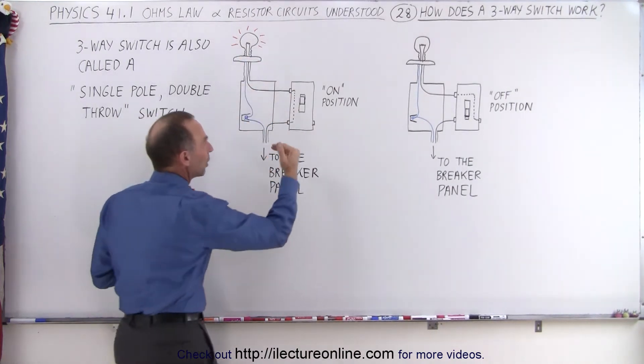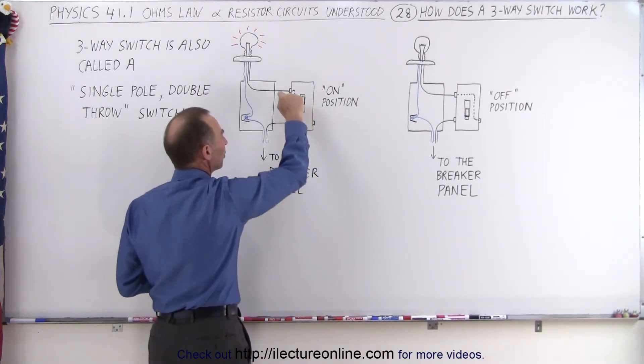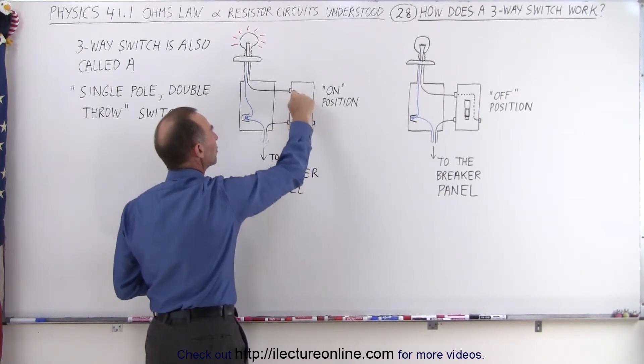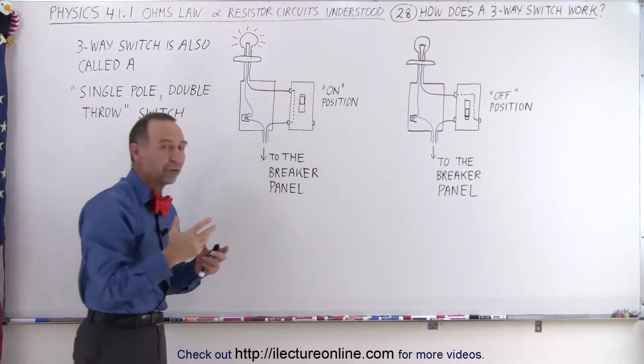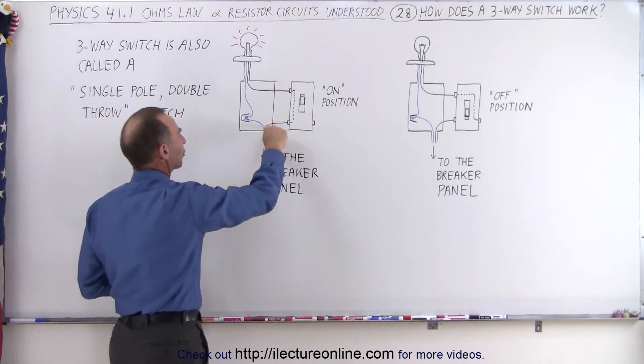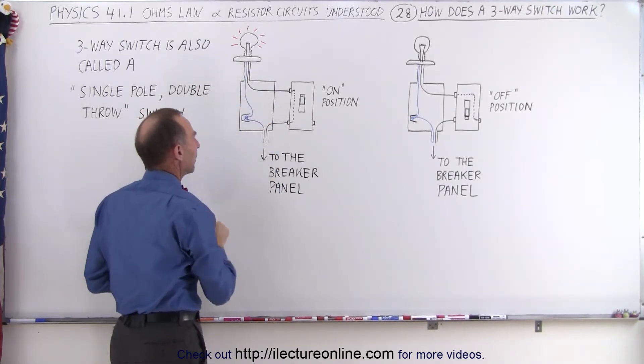And then when you take the switch and you put it in an up or on position, an upward position, then these two are internally connected and there's a continuous path on this black wire right here, and therefore the light bulb will indeed go on. In other words, you have a path to go all the way to the light bulb, and then a path to come all the way back, back to the breaker panel.